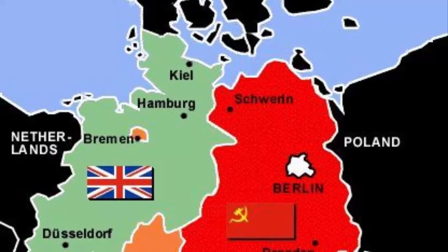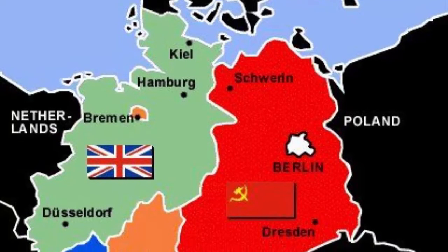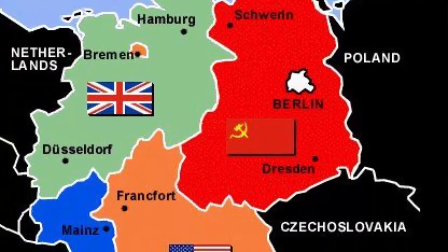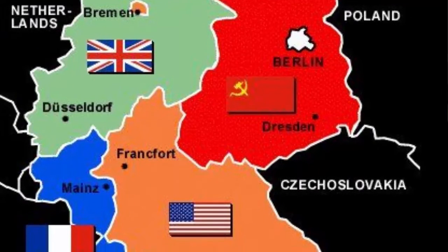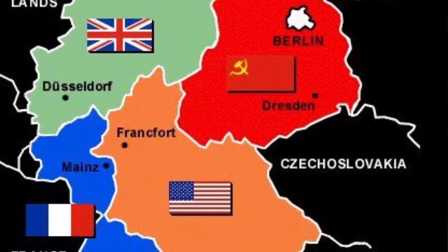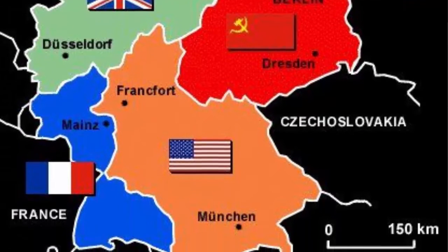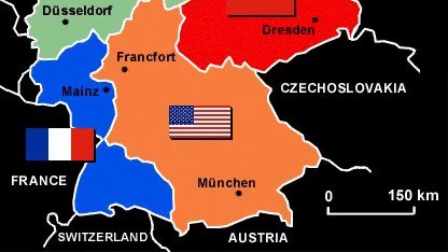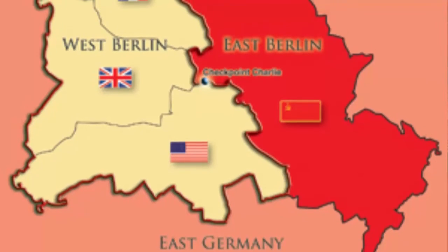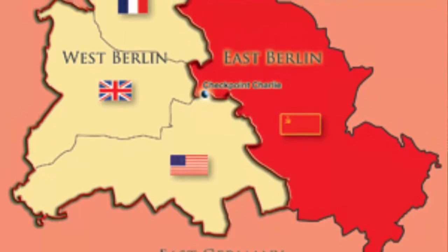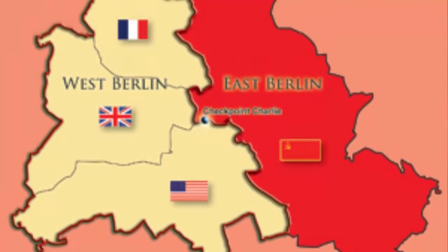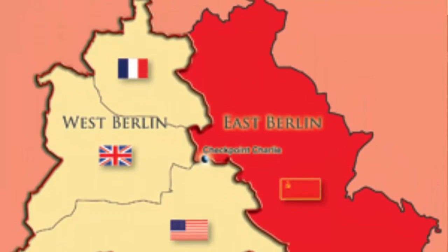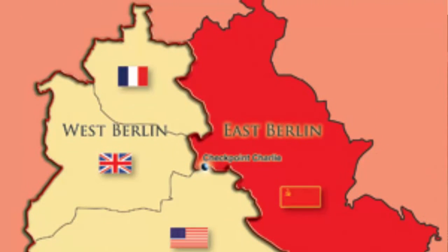The United States, the French, Great Britain and the Soviet Union were all responsible for a certain portion of Germany. They also agreed to do the same thing with Berlin, the capital city of Germany. This would make things very challenging because Berlin is located in the Soviet portion of Germany.